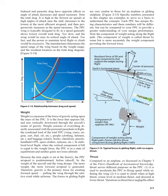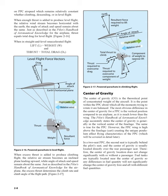Thrust serves different purposes in the PPC compared to an airplane: it is used to accelerate the PPC to flying speed while inflating the wing, and it is used to climb at high thrust, cruise level at medium thrust, and descend at lower thrust. Variations in thrust have negligible effect on PPC airspeed, which remains relatively constant whether climbing, descending, or in level flight. When enough thrust is added to produce level flight, the relative wind stream becomes horizontal with the Earth and the angle of attack and speed remain about the same. When excess thrust is added to produce climbing flight, the relative airstream becomes an inclined plane leading upward while angle of attack and speed remain about the same. The excess thrust determines the climb rate and climb angle of the flight path.